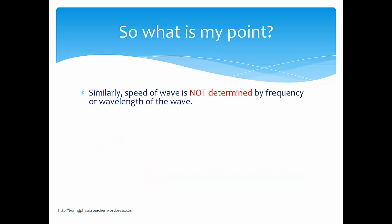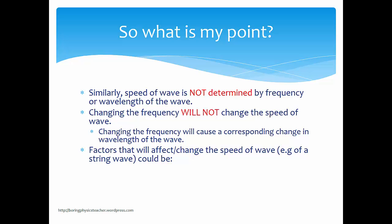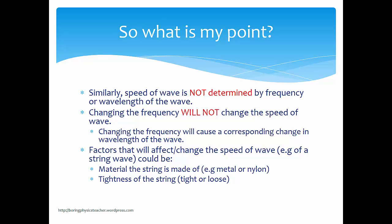Similarly, the speed of a wave is not determined by its frequency or wavelength. Changing the frequency will not change the speed of the wave, just as changing the distance doesn't change the speed of the person. This means that changing the frequency will cause a corresponding change in the wavelength. For a string wave like in the simulation, factors that affect wave speed include the material the string is made of, the thickness of the string, how tight or loose it is, and whether it's in air or water.